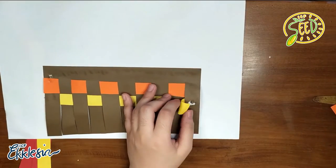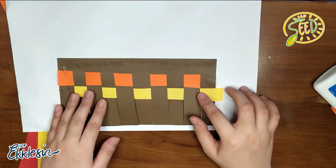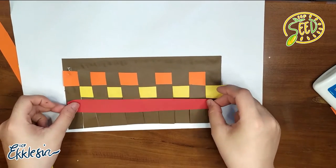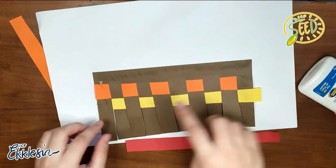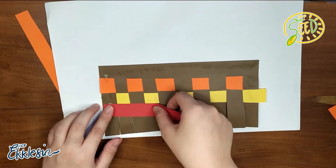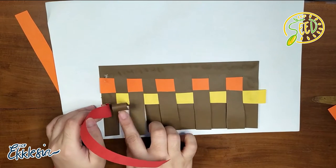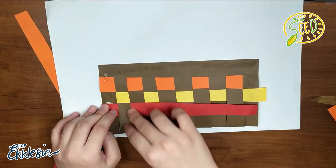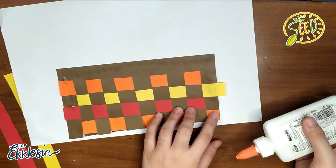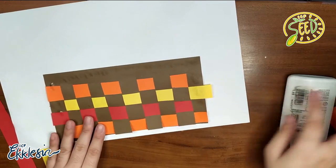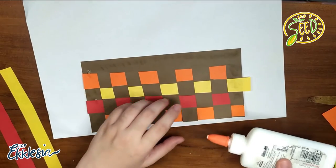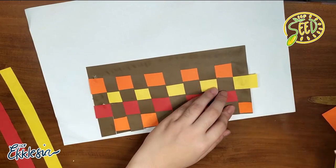Don't forget to put the glue. Tuloy-tuloy lang tayo sa pag-over, under, over, under, over, under, nung mga strips. Kung nahihirapan, dahan-dahan lang. Huwag mahihiyang kumigyan ng tulong. Gawin natin yun hanggang maubos natin yung spaces sa baba. Hanggang matapos natin yung buong weave. Lagyan ng glue yung mga dulo para hindi dun to ma-sira. Very good.